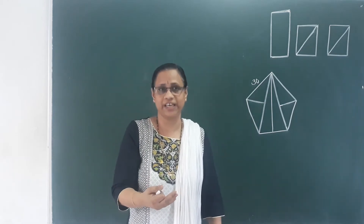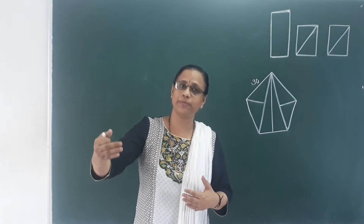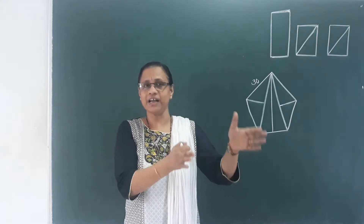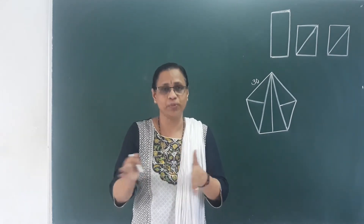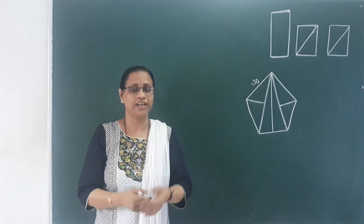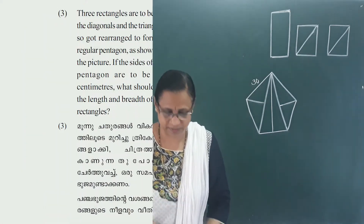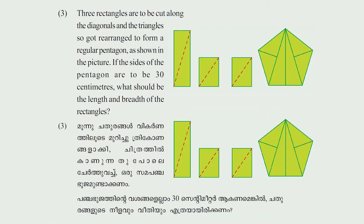What do we call the tan? Tan is the ratio of the opposite side divided by the adjacent side. Now, page number 117, third question: Three rectangles are to be cut along the diagonals, and the triangles so obtained are rearranged to form a regular pentagon.